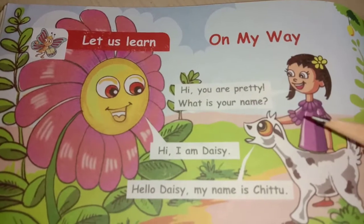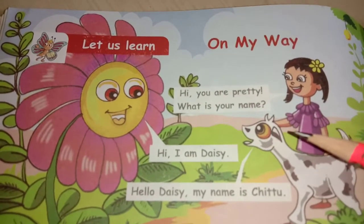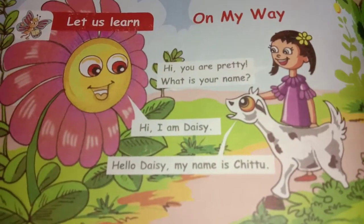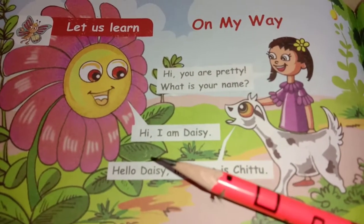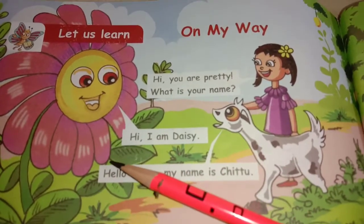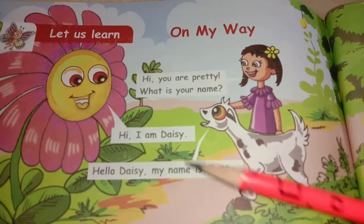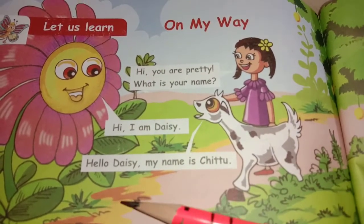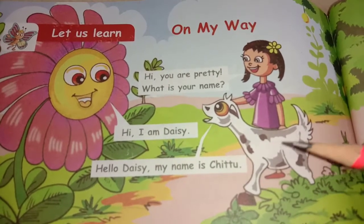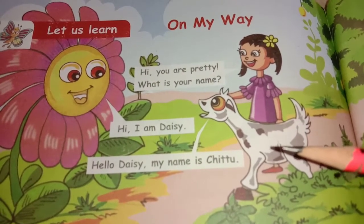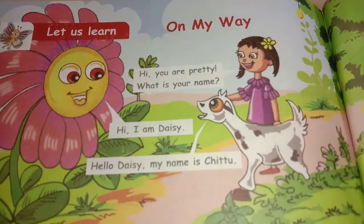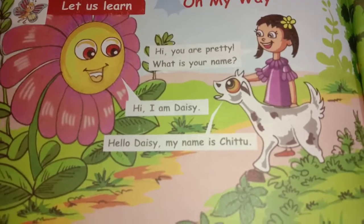Hi, you are pretty. What is your name? Who is asking? Hi, I am Daisy. What is the name of a flower? Daisy. So what is Chittu's conversation? Hello, Daisy. My name is Chittu. Chittu immediately is replying. Hello, Daisy. My name is Chittu. He has a conversation with the flower, Daisy.